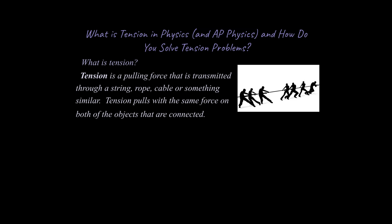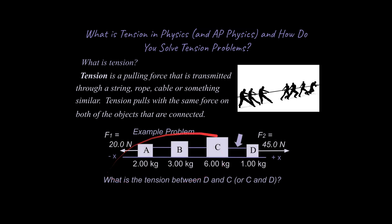It's important to note that tension pulls with the same force on both objects that are connected together. Our example problem involves four masses — A, B, C, and D — and the question asks for the tension force between C and D. The external force to the right is +45 newtons and the external force to the left is -20 newtons.